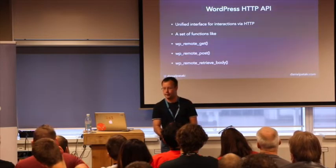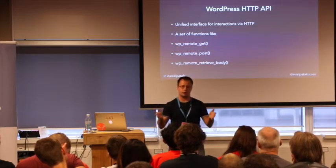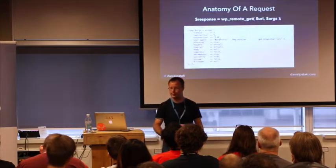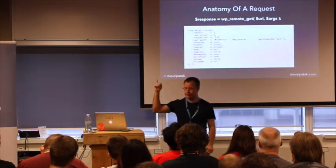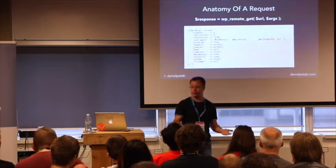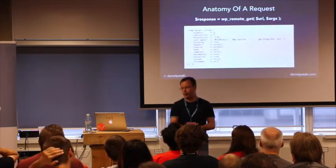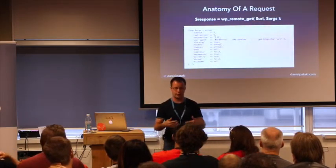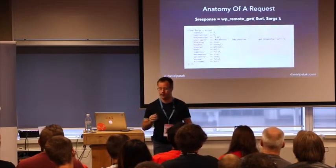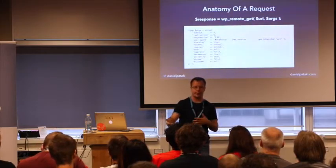WordPress has an HTTP API, which is awesome, so we should use that. It's a unified interface for interactions with HTTP — you don't need to worry about all the underlying stuff. You just need to figure out a few basic functions like wp_remote_get, which gives you a GET request; wp_remote_post, which sends a POST request; and wp_remote_retrieve_body, which retrieves the body of that response. An anatomy of a request: you use the wp_remote_get function with two parameters — a URL (the resource you want to interact with) and a bunch of arguments including timeouts, redirections, headers (key-value pairs), and body.